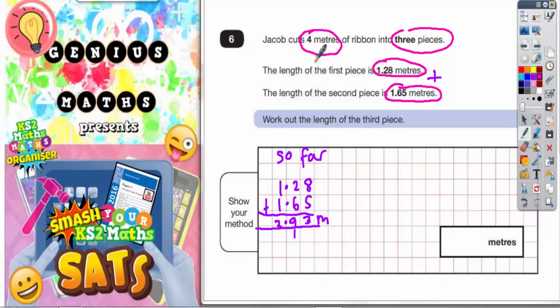Now then, the total length of the ribbon is 4 meters here. So we need to figure out what the extra bit is to get from 2.93 meters back up to 4 meters. So the extra bit, and the extra bit will actually be the third piece. So we've got 3 pieces. So the extra bit is going to be 4 meters subtract 2.93 meters.